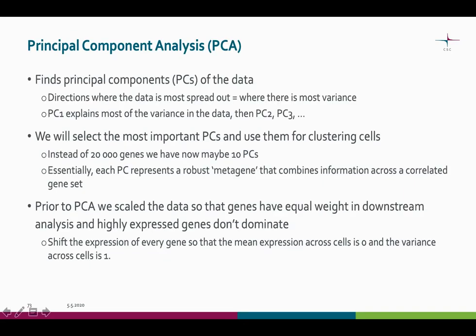Let's take a closer look at PCA, which stands for principal component analysis. PCA tries to find the principal components of the data — the directions where the data is most spread out, meaning where there is most variance. The first principal component explains most of the variance in the data, the second explains second most variance, and so forth. We will select the most important principal components and use them for clustering. So instead of 20,000 genes, we might have maybe 10 principal components — the dimensions of the data go from 20,000 to 10.